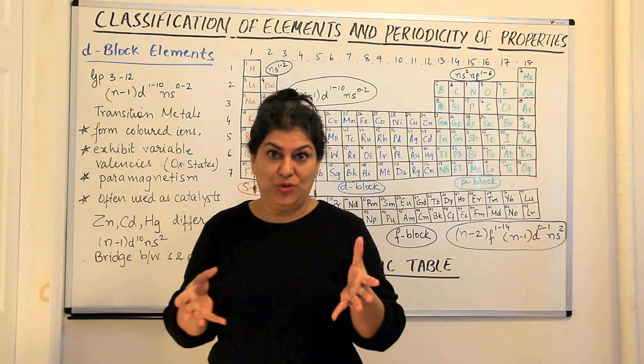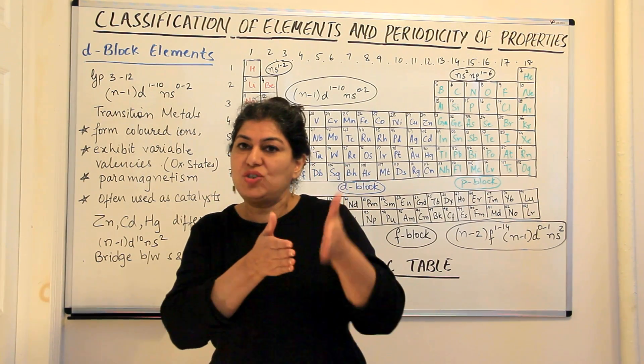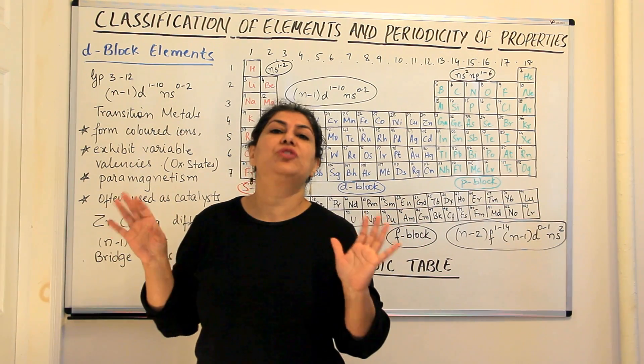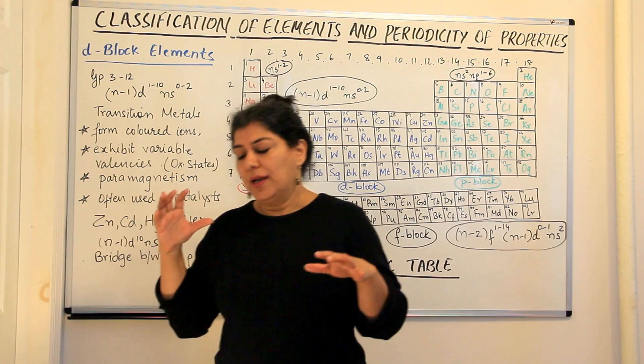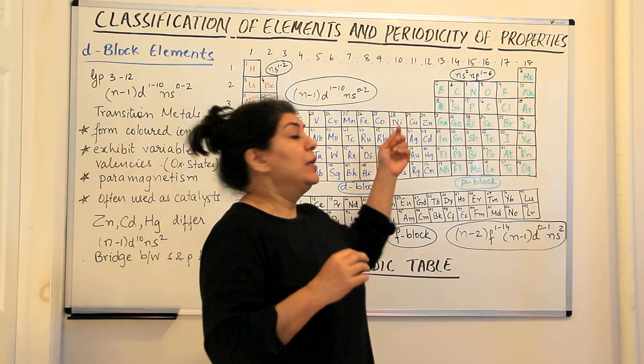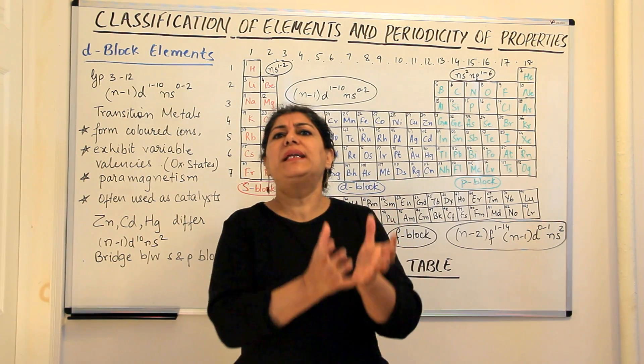They are temporary magnets, you could say. They act as magnetic substances in the presence of a magnet but if you remove the magnet, they lose that magnetism. And ferromagnetic substances like iron, cobalt, nickel, these are the ones that are permanently magnetic.